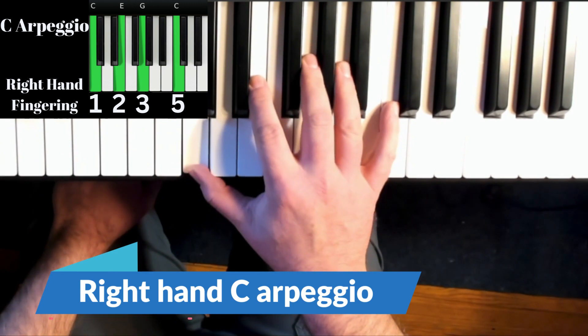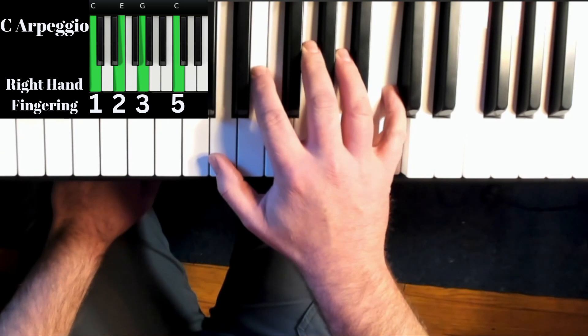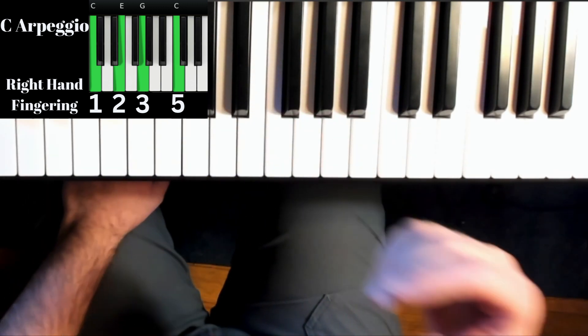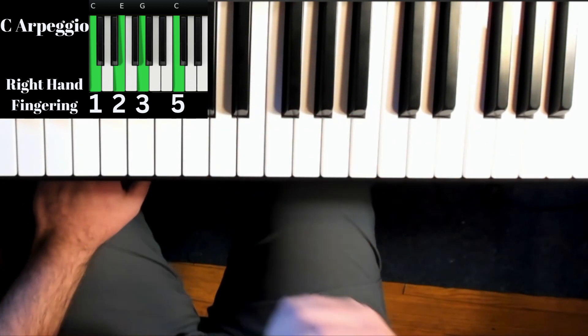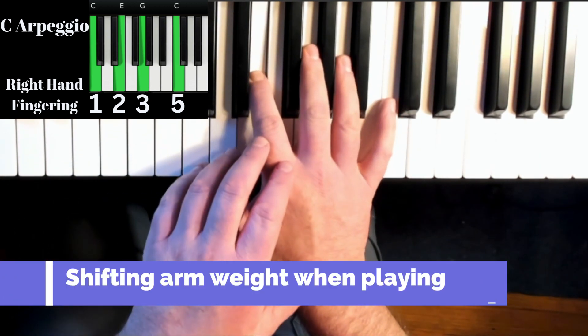So we're going to just play the one, the two, the E, third finger on G and then five. I'm going to say this a few times in this lesson: please think about shifting your arm weight. We don't want to just press from here. We're not just glued.